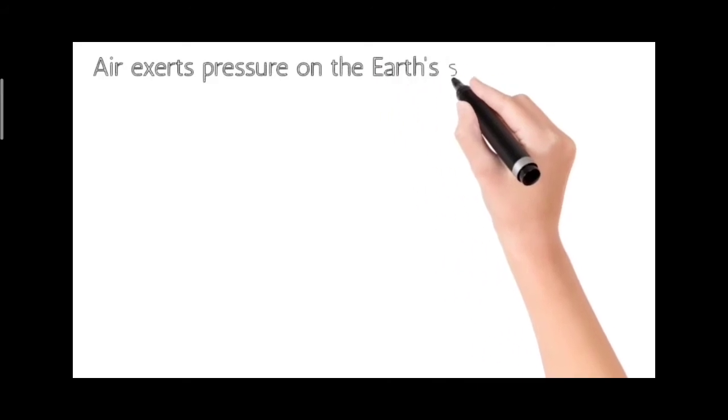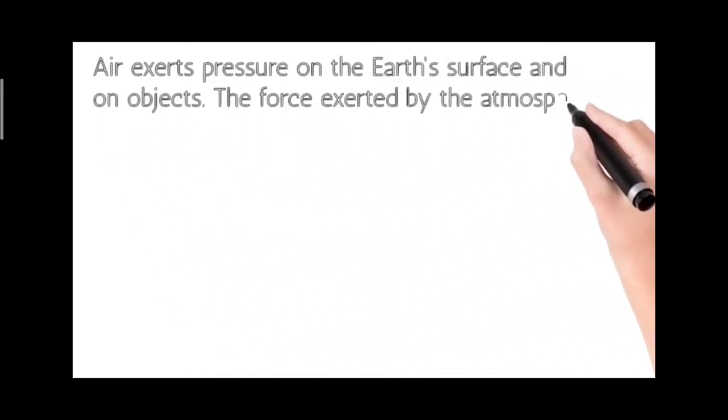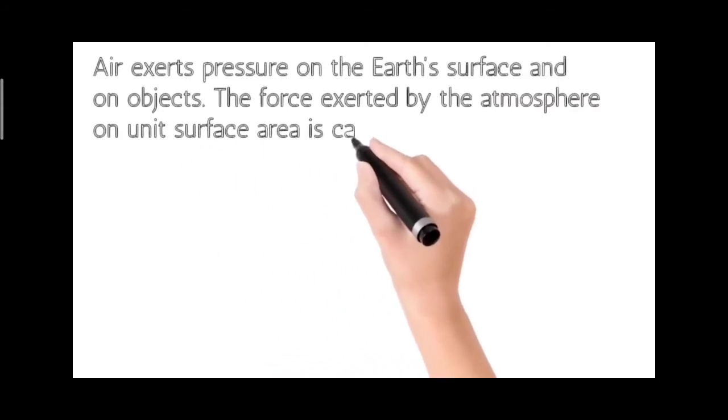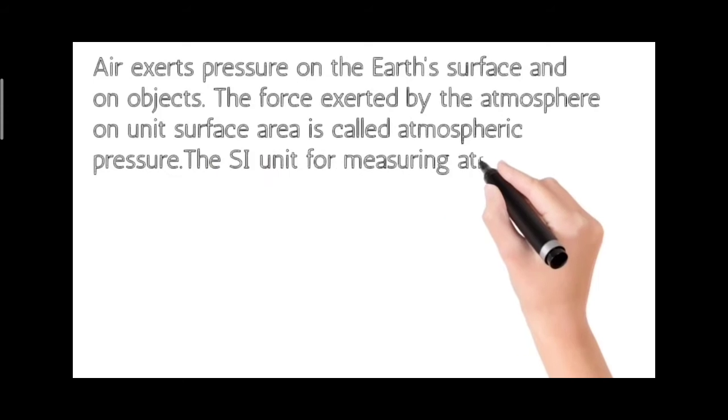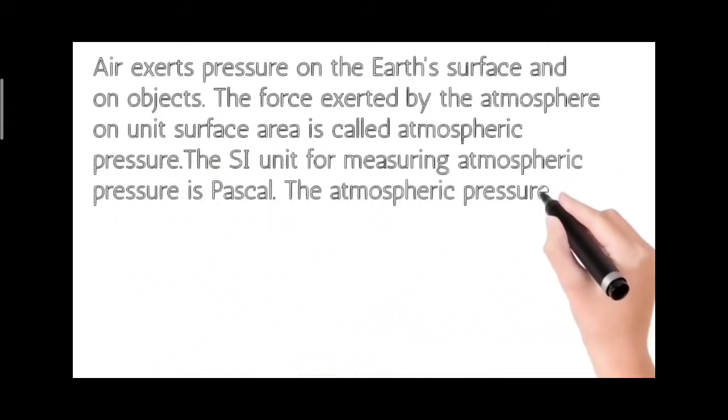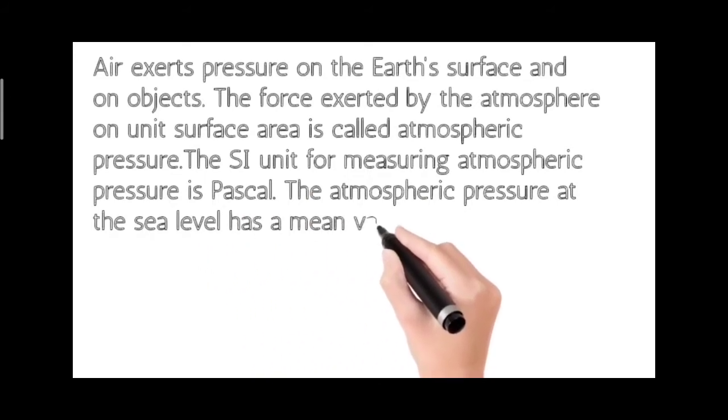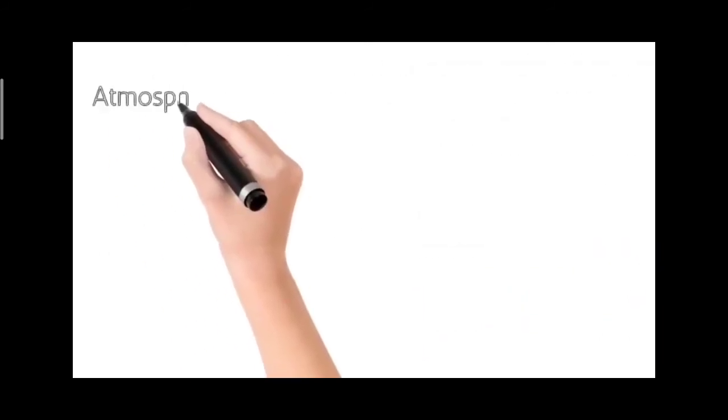Air exerts pressure on the earth's surface and on objects. The force exerted by the atmosphere on unit surface area is called Atmospheric Pressure. The SI unit for measuring atmospheric pressure is Pascal. The atmospheric pressure at the sea level has a mean value of 101,325 Pascals.